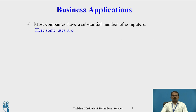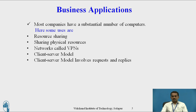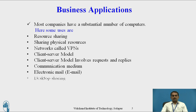Business Application: Most companies have a substantial number of computers. The key uses include Resource Sharing, Sharing Physical Resources, a network called VPN, the Client-Server Model, Communication Media, Email, and Desktop Sharing. In a company, people can use the Computer Network concept for sharing resources. While sending data from one station to another station or from one city to another city, they can use the concept of Resource Sharing.